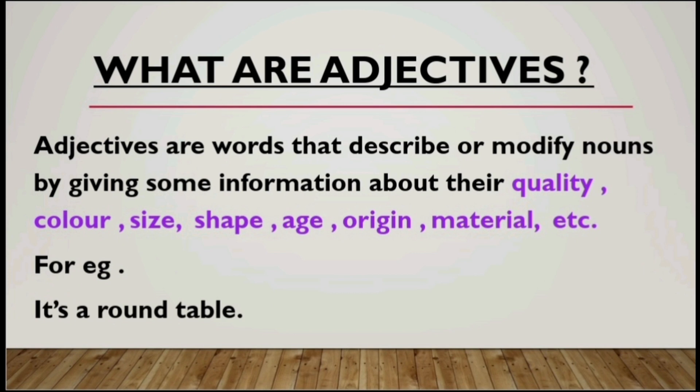It tells us about the age of a person or thing — for example, the house is ancient. 'Ancient' is the description of the house. Next is origin — from where the things are being originated. They also give information about the material of which something is made up of. So, adjectives describe nouns and they modify nouns, giving us information about the quality, colour, shape, size, age, origin, and material of a particular noun being described.